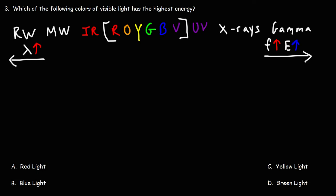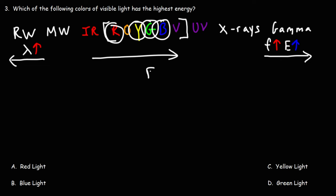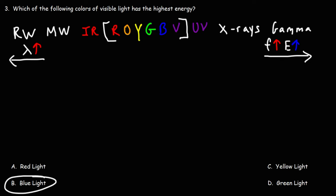Number three: which of the following colors of visible light has the highest energy — red light, blue light, yellow light, or green light? We know that energy increases towards higher frequencies. Out of those four colors, blue light has the highest energy. Blue light has more energy than red, yellow, or green light. Note that violet light has more energy than blue light, but that wasn't one of the options. Answer choice B is correct.